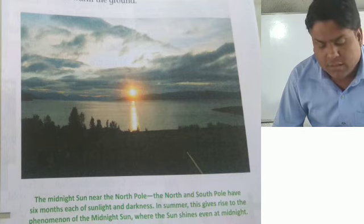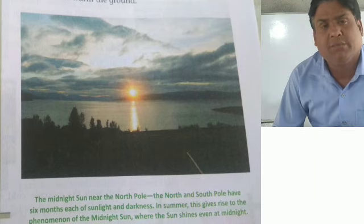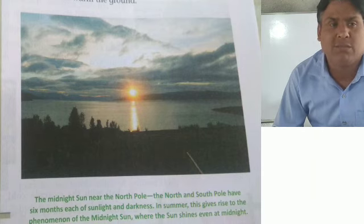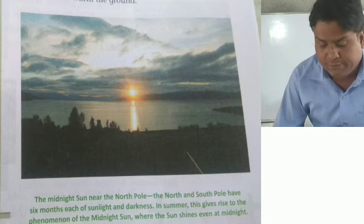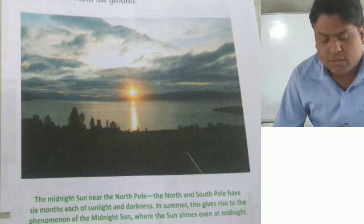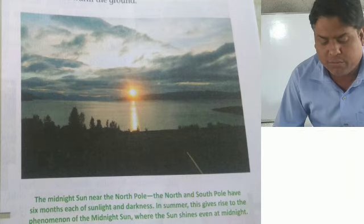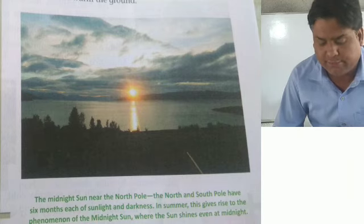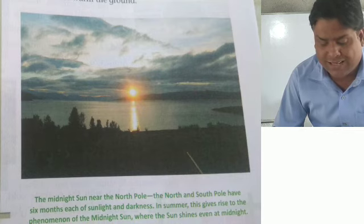The tundra type climate has winters that are very long and very severe, and summers are brief and cold. This type of climate is found along the coast of Greenland, northern Canada, Alaska, and the northern coastline of Eurasia.